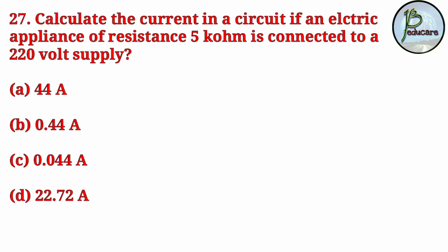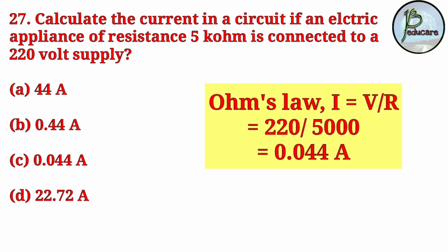Next question: Calculate the current in a circuit if an electric appliance of resistance 5 kilohm is connected to a 220 volt supply. Applying Ohm's Law: I = V/R = 220/5000, since 5 kilohm = 5000 ohm. The answer is 0.044 ampere. The correct option is answer C.